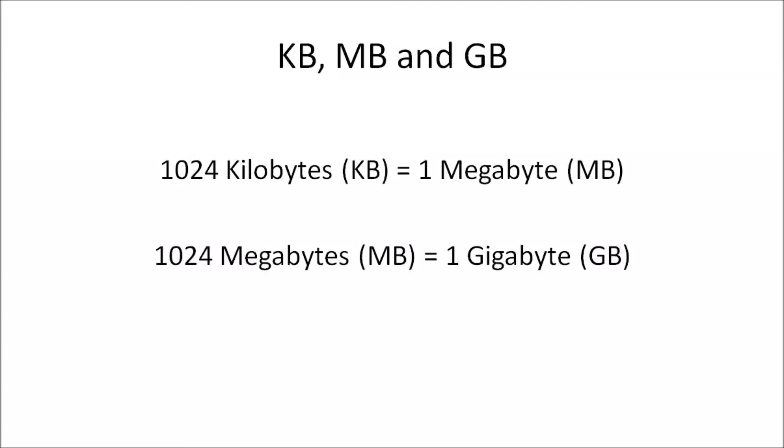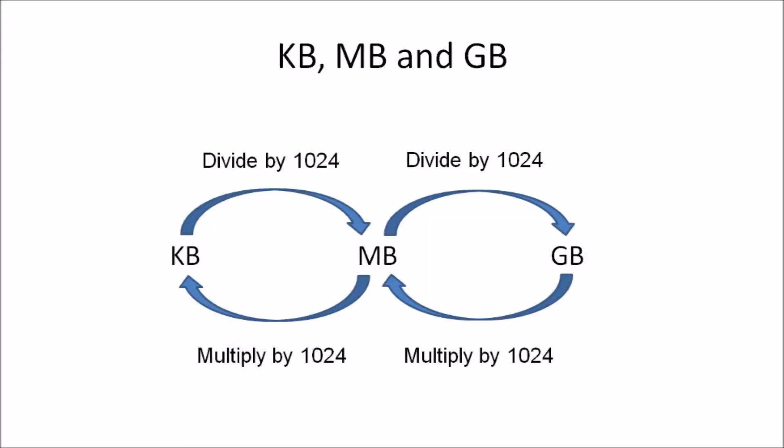In this video I'll show you how to convert between kilobytes, megabytes, and gigabytes. It's important to note that 1024 kilobytes equals 1 megabyte, and 1024 megabytes equals 1 gigabyte. The conversion factor we use is 1024, and I've made a diagram to explain this better.